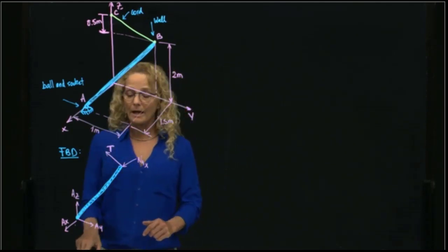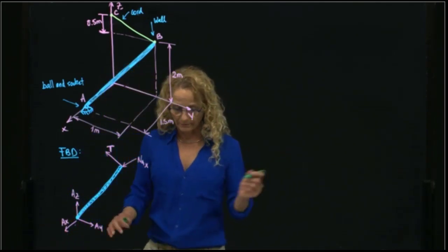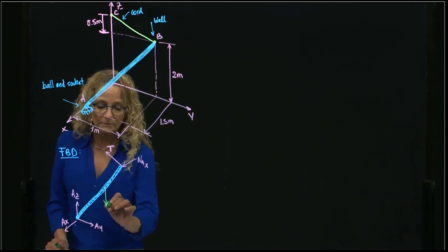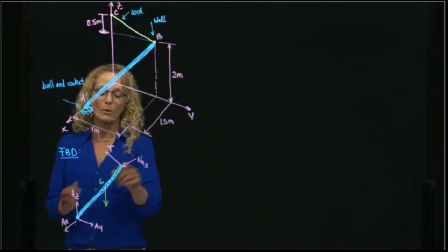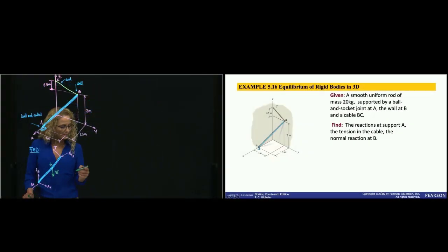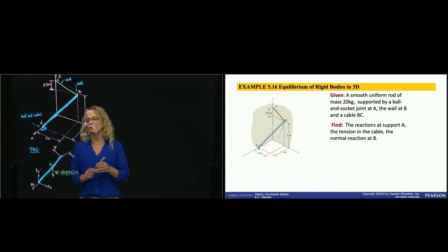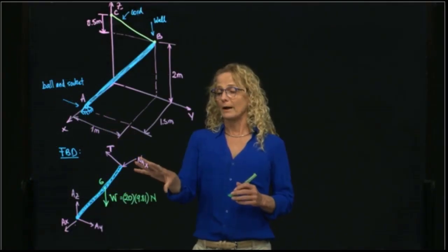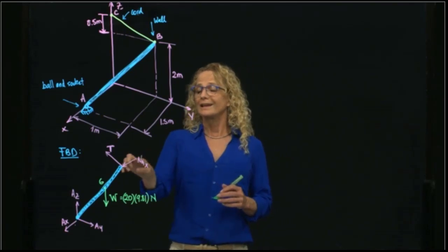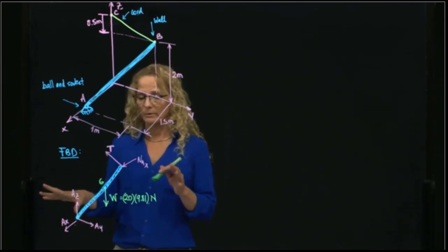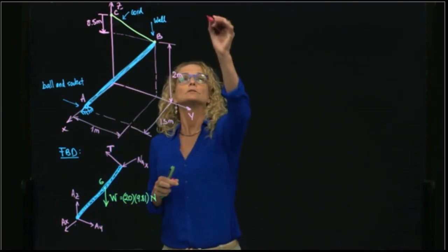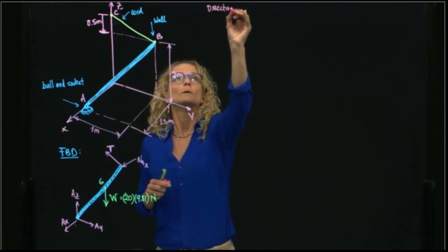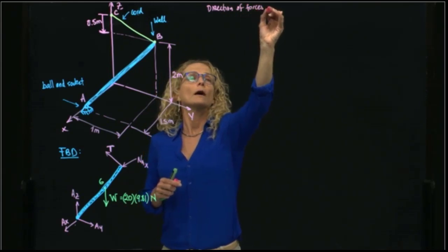And then we have our active forces, which is the weight. The weight will be located at the middle of my pole. And the weight is given. The weight, it says that it has a mass of 20 kilograms. And therefore, the weight will be that mass multiplied by the gravity in newtons. So that's our free body diagram. Now that we have the free body diagram, let's first get the directions of all the forces to make sure that we have everything we need. Directions of forces and reactions.